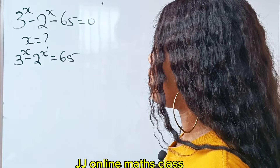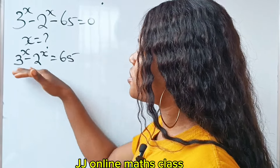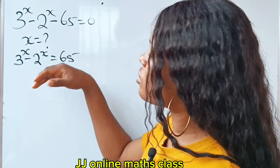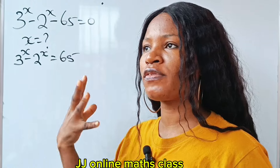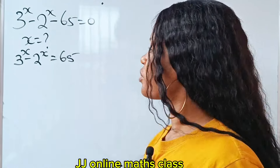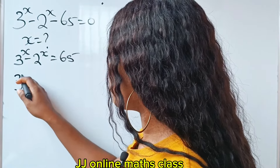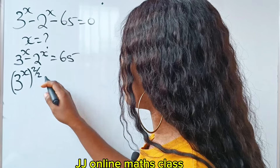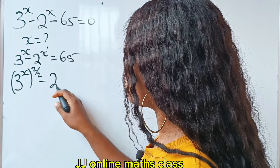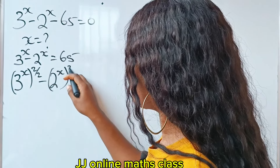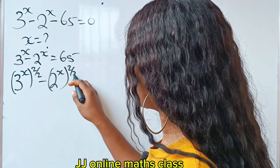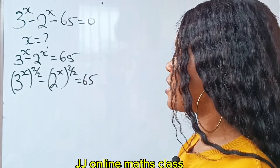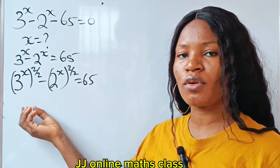Let's raise each of these terms to the power of 2 over 2. There's a reason for that because I want to form the difference of two squares. So we have 3 to the power of x minus 2 to the power of x raised to the power of 2 over 2, and I want to form the difference of two squares from here.